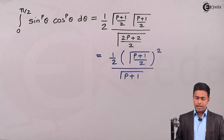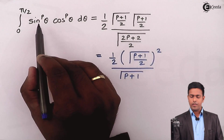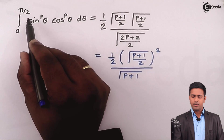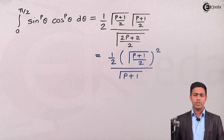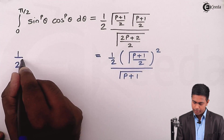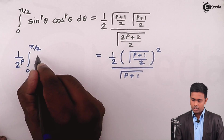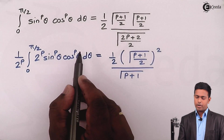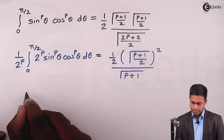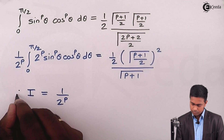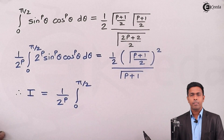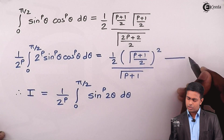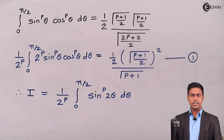Now we solve the integral on the left hand side. We have sin raised to p theta times cos raised to p theta. We multiply and divide by 2 raised to p, so that 2 sin theta cos theta becomes sin 2 theta. This gives us 1 upon 2 raised to p times the integration from 0 to pi by 2 of sin raised to p of 2 theta d theta. We call this equation number 1.